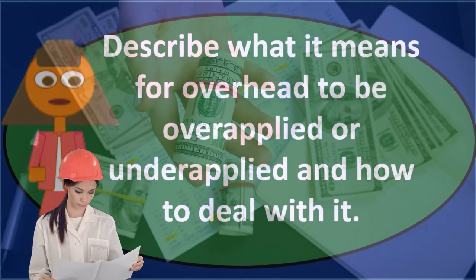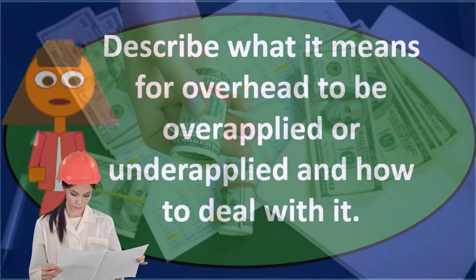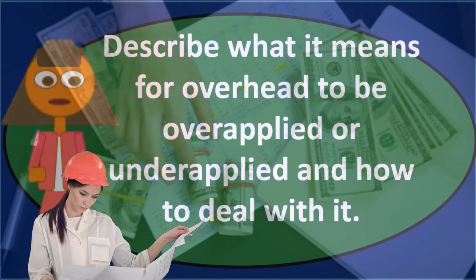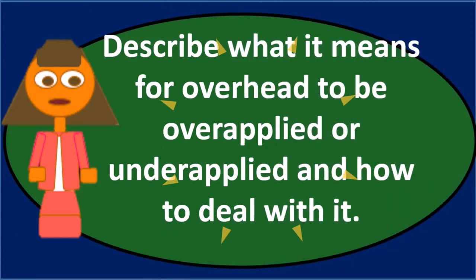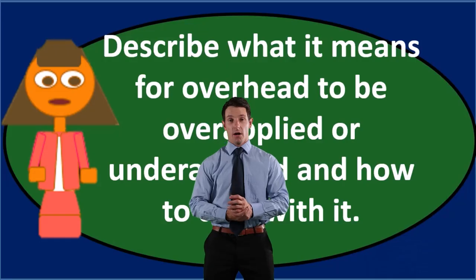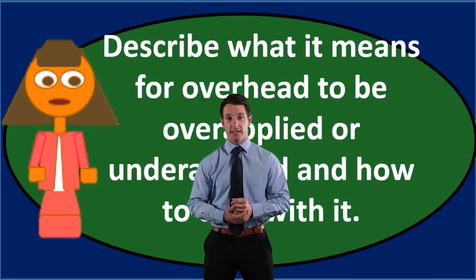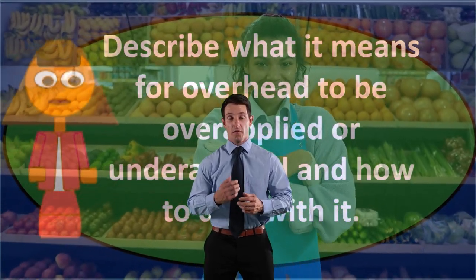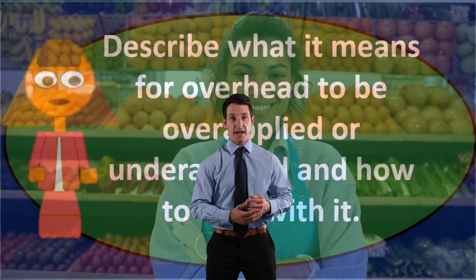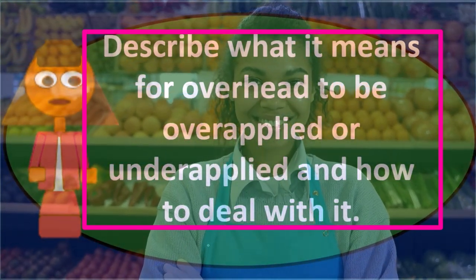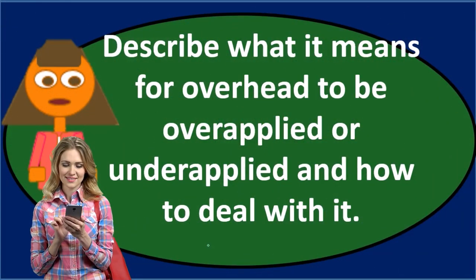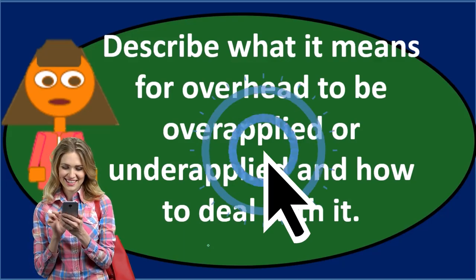Although the overhead account isn't really a clearing account in the sense of closing to retained earnings — it's not a temporary account in that way — it is temporary in the sense that we force it to close out, generally to cost of goods sold, so we can start the process over. Whatever's left in overhead — whether under or over applied — we make it zero by recording a journal entry.